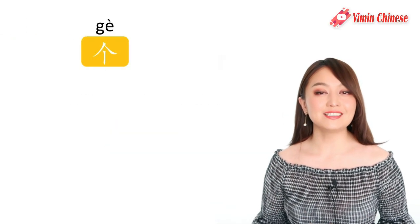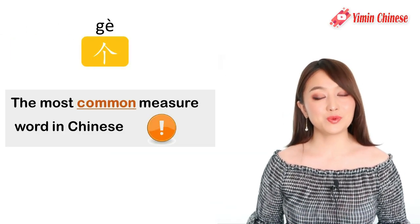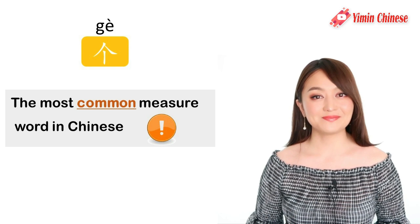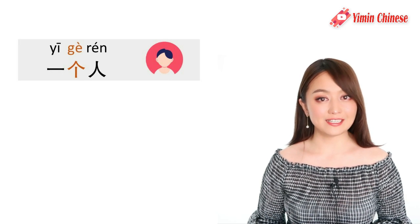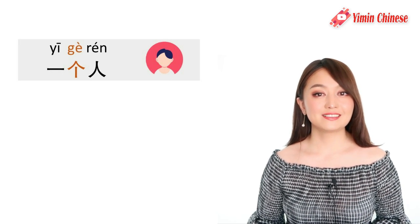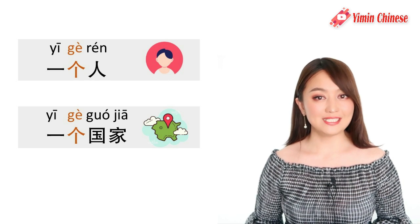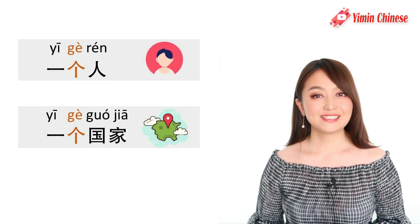First, 个 (gè). 个 is the most common measure word in Chinese. 一个人, a person. Or 一个国家, a country.